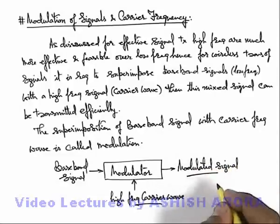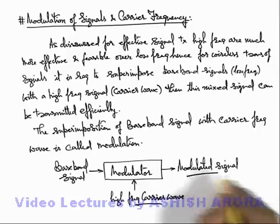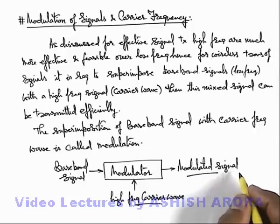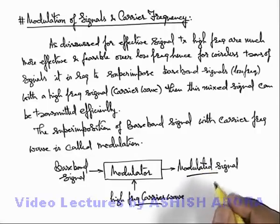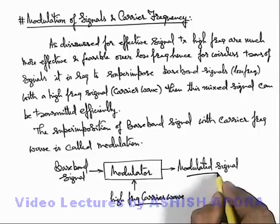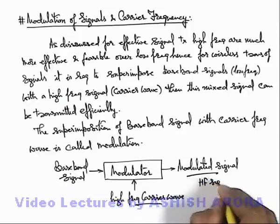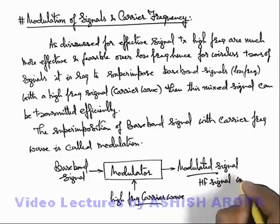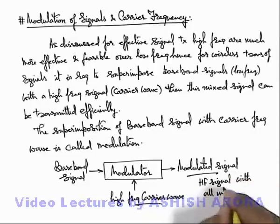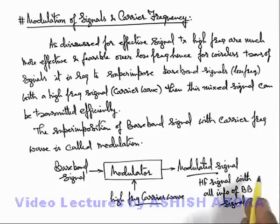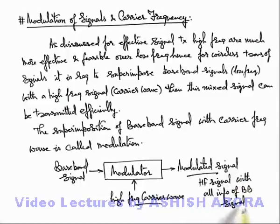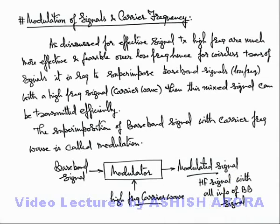The modulated signal is the specified format signal which can be easily transmitted over the channel, as discussed in the section of elements of communication system, the previous topic. So the modulated signal is a high frequency signal with all the information of the baseband signal. At the other end, where the receiver will receive this modulated signal, we extract the baseband signal from this high frequency signal, and this process we call demodulation, which we will take up in the coming section.